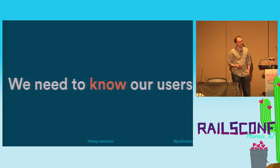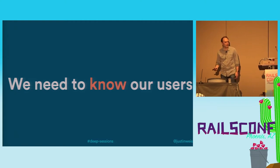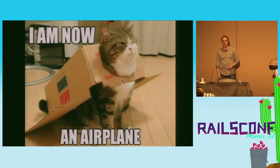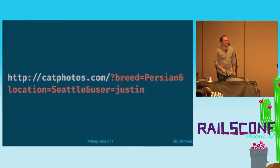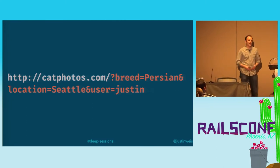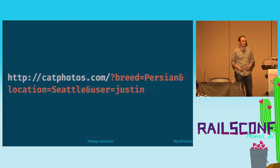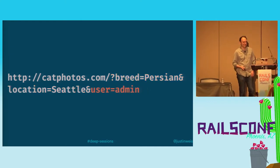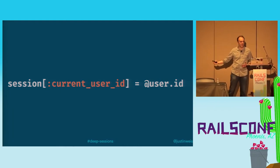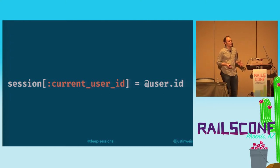We need to know about our users and we need to store some data about them, whether that's a user ID, a preferred language, whether they like the mobile or the desktop version of your site, or what their favorite breed of cat to make memes with is. We put data in the session hash, and it magically comes back to us on the next request, so we never have to worry about which user is accessing our site ever again.